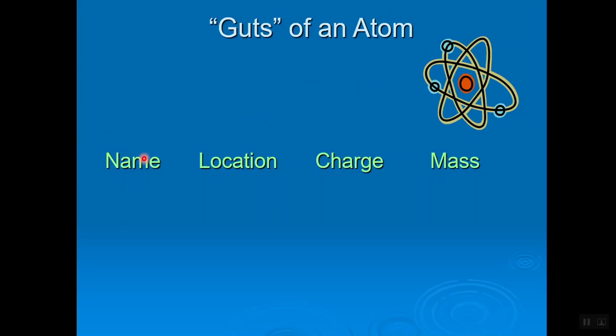There is a particle called a proton. It lives in the nucleus. The charge is plus one. One subatomic particle is the proton. It lives in the nucleus. It has a plus one charge.